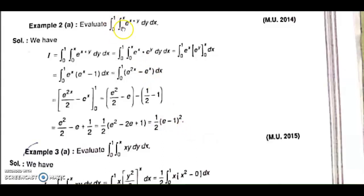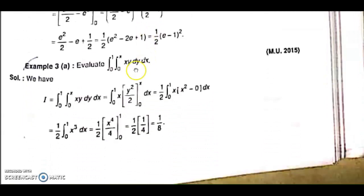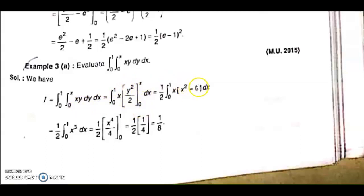So e^(2x) integrates as e^(2x) upon 2, minus e^x which integrates as e^x. Upper limit minus lower limit gives the answer. That way it is very simple. I repeat the abstract: if inner integral limits are functions of x, then your first variable of integration is y, and vice versa. For another example, evaluate integral from 0 to 1, 0 to x, of xy dy dx. Again, inner integral limits are functions of x, so they are the limits of y. x is constant taken outside, and y integrates as y²/2 with limits 0 and x. Upper limit minus lower limit gives the answer 1/8.